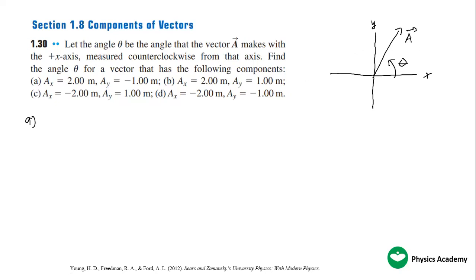It could be here, it could be here, it could be anywhere in the Cartesian coordinate system. For letter A, this angle, this vector A must be in the fourth quadrant.